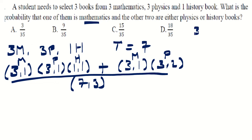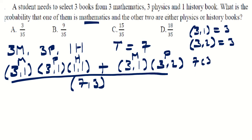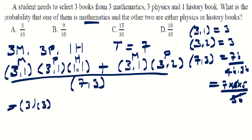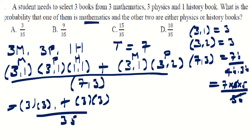Recall that C(3,1) = 3 and C(3,2) = 3. For C(7,3): 7! / (4! × 3!) = (7 × 6 × 5) / 6 = 35. The numerator: C(3,1) × C(3,1) × C(1,1) + C(3,1) × C(3,2) = 3 × 3 × 1 + 3 × 3 = 9 + 9 = 18. So the probability is 18/35.